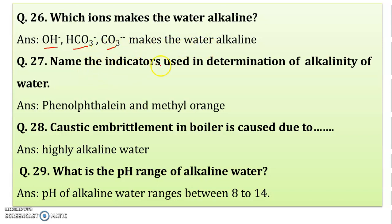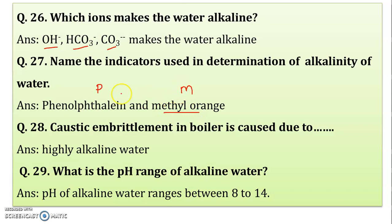Name the indicator used in the determination of alkalinity of water. Two indicators are used in the determination of alkalinity of water. One is phenolphthalein indicator — we call it the P endpoint — and next is methyl orange, that is the M endpoint. So two indicators are used: phenolphthalein indicator and methyl orange indicator.